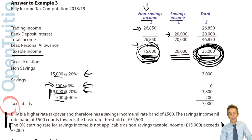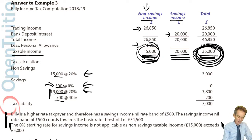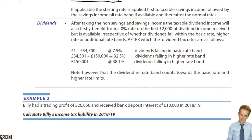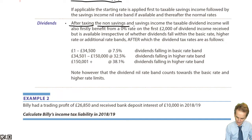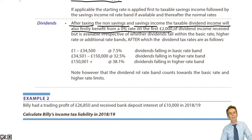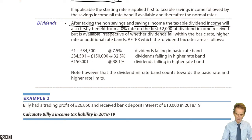We now bring in the last piece of the jigsaw: dividend income. Back to chapter 2 of your notes. We only tax taxable dividend income after taxing non-savings and then savings income. After that, taxable dividend income first benefits from a 0% dividend income nil rate band. This has been reduced to £2,000 for the 2018-19 tax year, down from £5,000 previously.